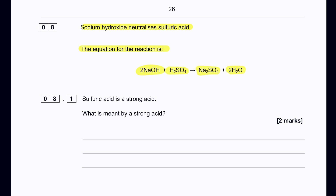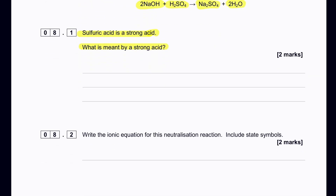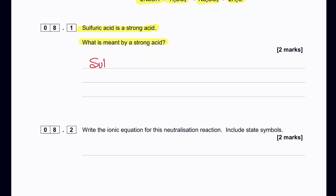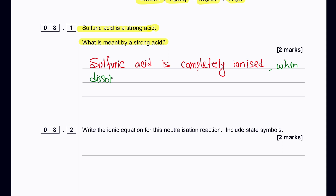Sodium hydroxide neutralizes sulfuric acid: 2NaOH + H₂SO₄ → Na₂SO₄ + 2H₂O. Sulfuric acid is a strong acid. What is meant by a strong acid? A strong acid is one that is completely ionized in water when dissolved.